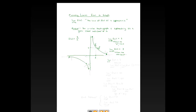Therefore, the general limit — with no plus or minus — as x goes to 1 equals 3. That's because when you approach from the right you get the same answer as from the left. If both one-sided limits are equal — in this case 3 equals 3 — then the general limit exists and equals that value.